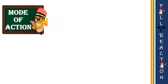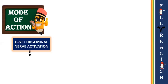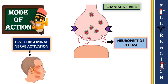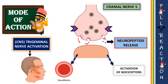Moving on to the mode of action: sumatriptan is used in the treatment of migraine, so to understand its mechanism of action we need to study the pathophysiology of migraine. During a migraine, the trigeminal nerve — cranial nerve 5 — becomes activated, resulting in the release of neuropeptides. These neuropeptides cause painful neurogenic inflammation in the meningeal vasculature, causing vasodilation and activation of nociceptors, all of which contribute to the migraine headache.